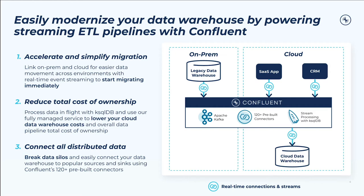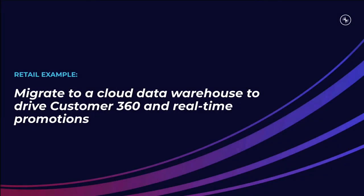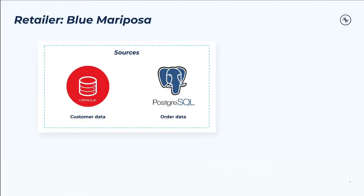Let's get on with an example where we'll bring this use case to life. Let's look at a pretend retailer — we'll call them Blue Mariposa. They'll go about their data warehouse modernization journey by migrating data from Oracle and Postgres to Synapse. Blue Mariposa uses Oracle on-prem to store most of their business-critical stuff like customer data, but they have online orders in a cloud instance of Postgres. They've got some data silos across on-prem and cloud environments, which is common, and that's preventing them from getting a complete and holistic view of their customers so they can create real-time personalized promotions.